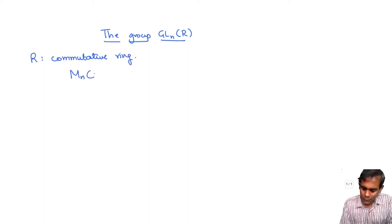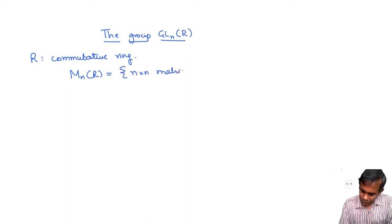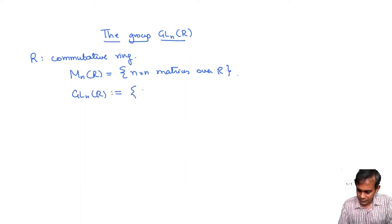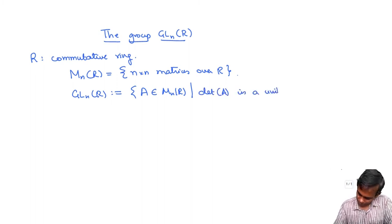And denote by M_n(R) the ring of all n by n matrices with entries in R. This is a ring and GL_n(R) is defined to be the set of those matrices A in M_n(R) such that determinant of A is a unit in R. Now I claim that GL_n(R) is a group under matrix multiplication.